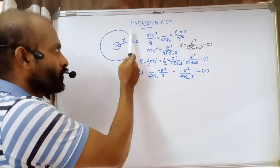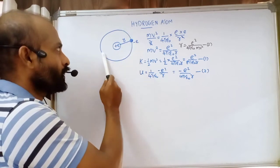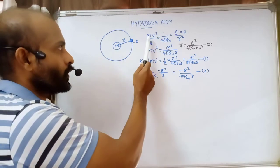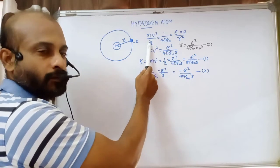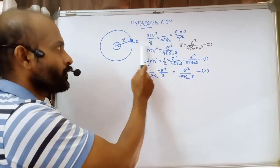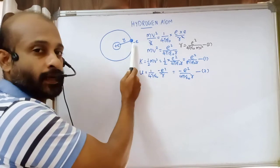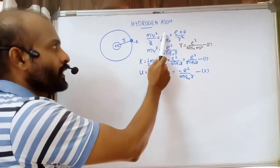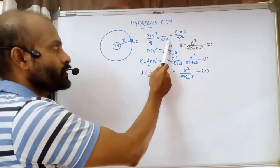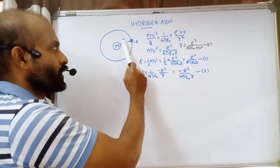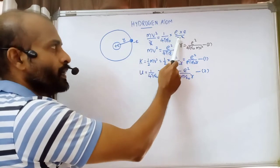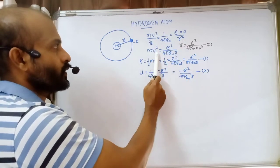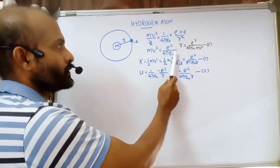Between the proton and the electron there is a strong attractive force. For the revolution of the electron around the nucleus, it requires a centripetal force. We can write the equation: the centripetal force mv²/r is provided by the electrostatic attraction. The electrostatic force is equal to one over four epsilon zero, times e squared divided by r squared. One r cancels, so mv² equals e² divided by four pi epsilon zero r.